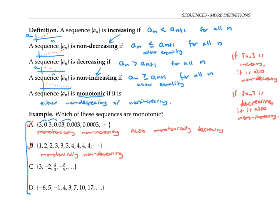The third sequence is not monotonic. The numbers bounce around between positive and negative numbers, and therefore sometimes we are decreasing while other times we're increasing.